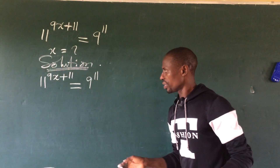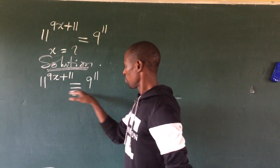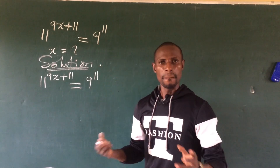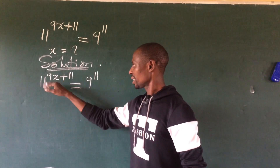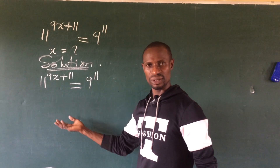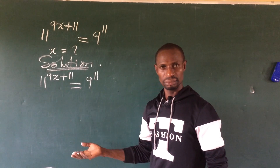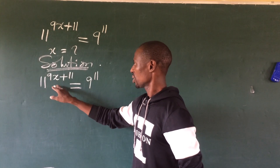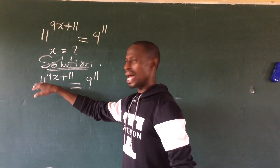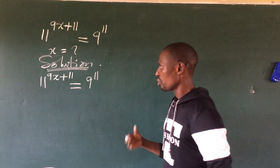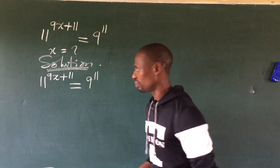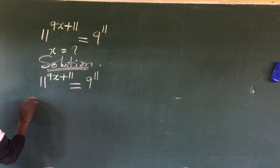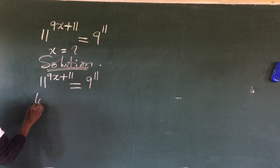What we do here is to take log to both sides of the equation, as I said in my previous video. Most mathematicians say taking the logarithm at the first step is not ideal, but to me there's nothing wrong with it. So what we do here is to either take ln of both sides or take log to base 10 of both sides. Let's take log to base 10.